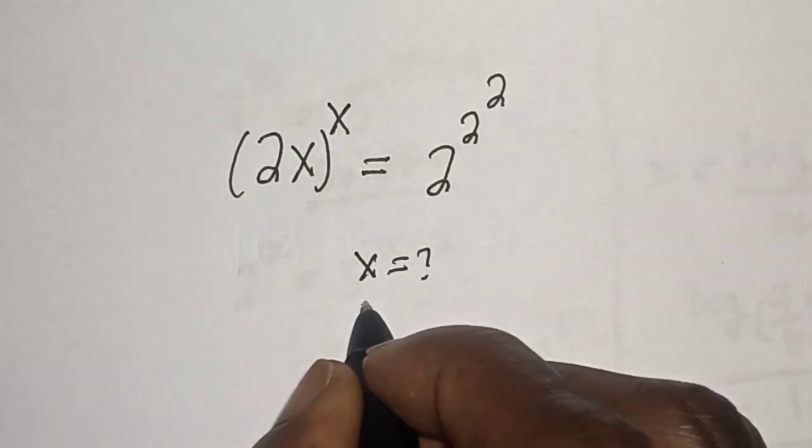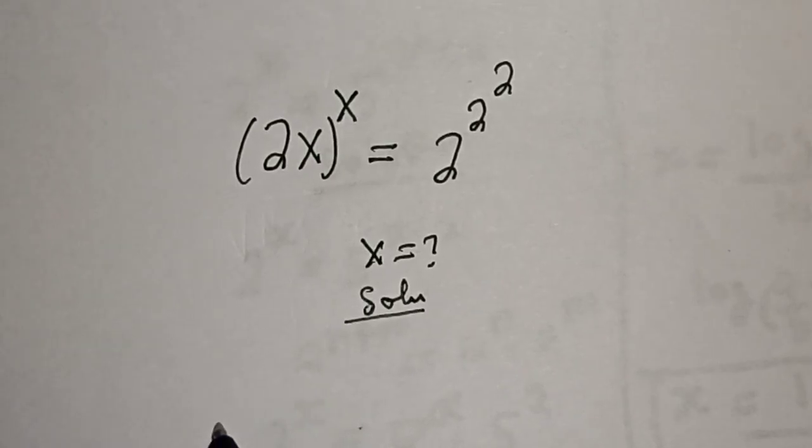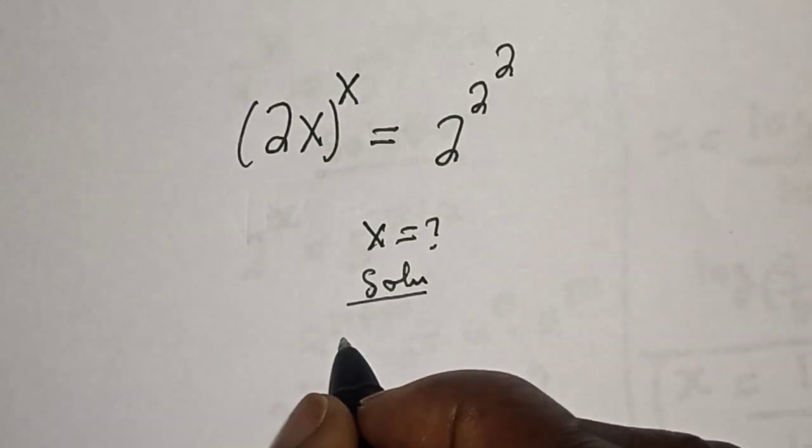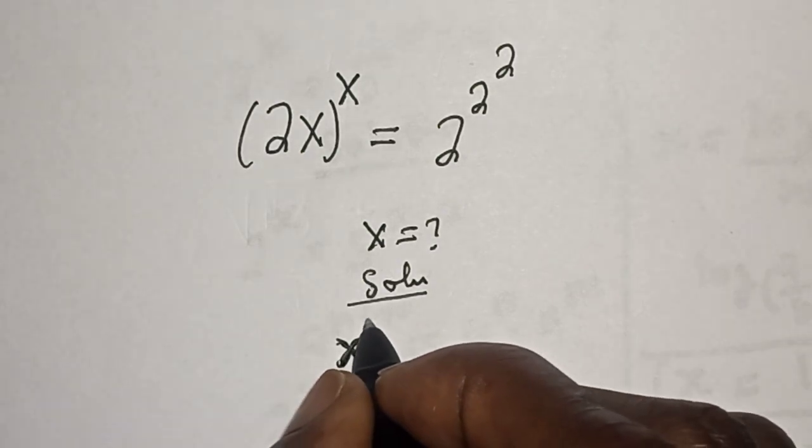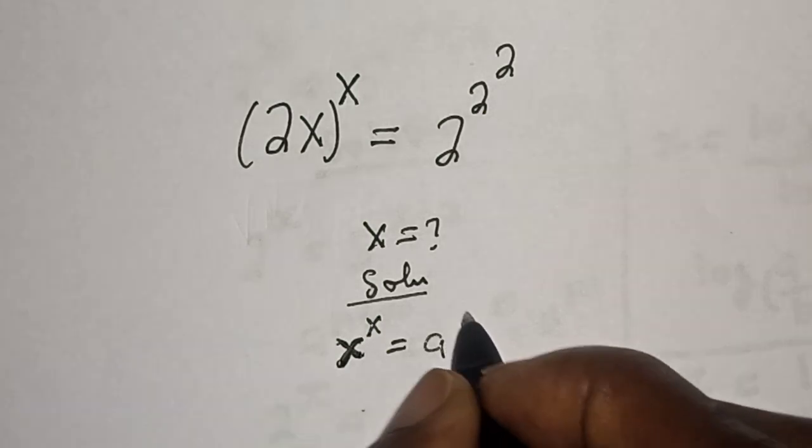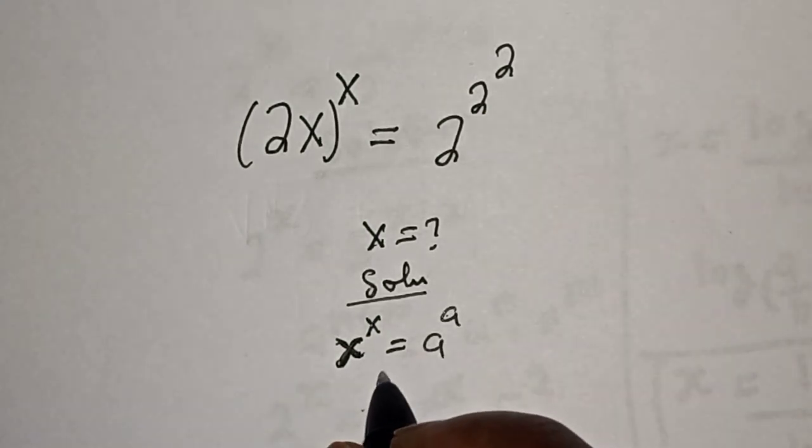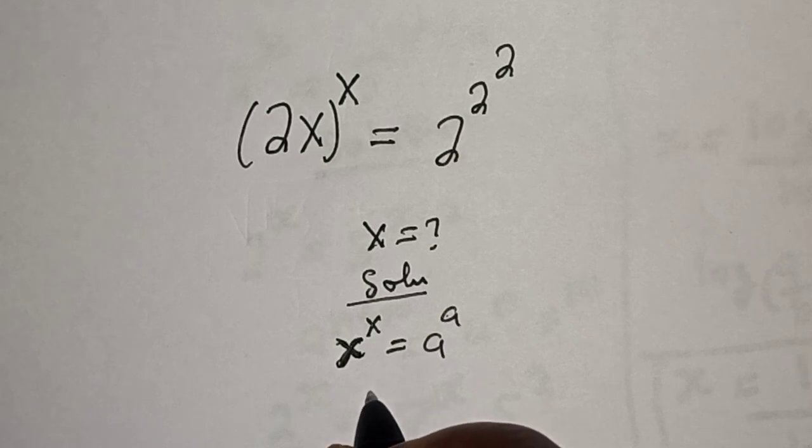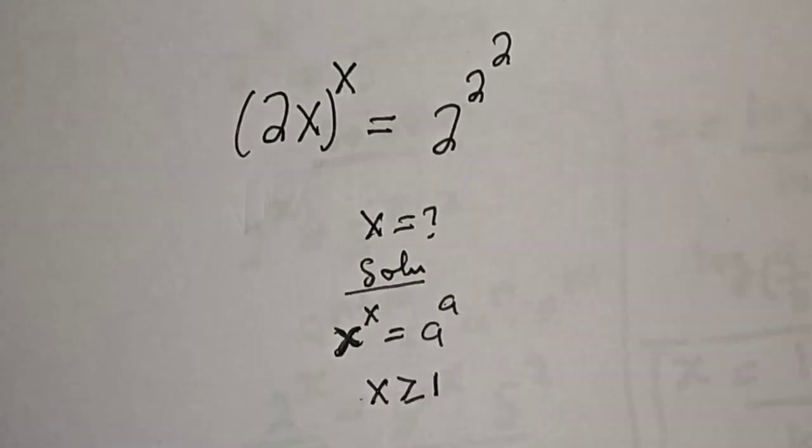Solution: Take note of this - if you have x^x = a^a, then as much as x is greater than or equal to 1, therefore x will be equal to a.